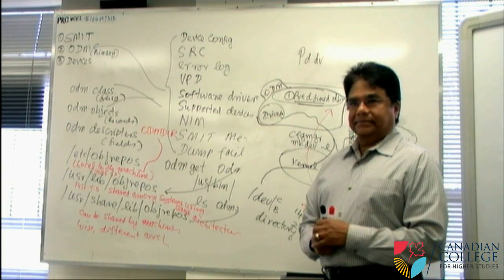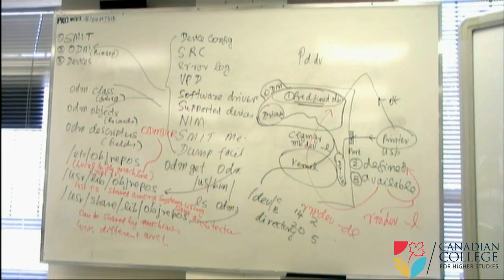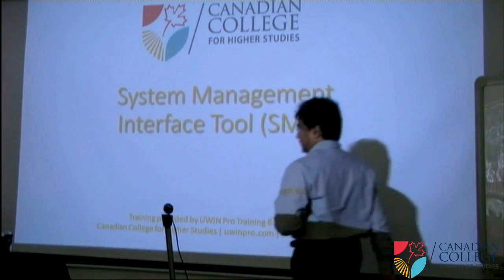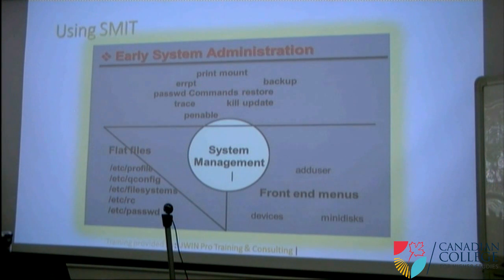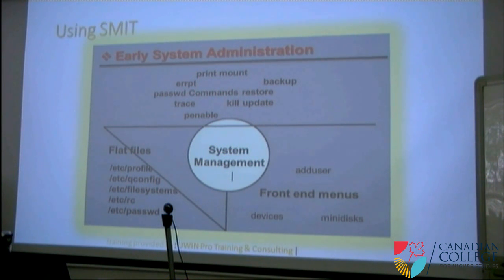A small corruption in the database will cause the whole system to crash. We were talking about the system management interface tool. Normally, you have to do it manually if you want to make changes — ETC profile, ETC config, all those files. And when you're checking reports, you have to use commands. They are not in one place, so you have to remember a lot of commands and their options. There are a lot of options in AIX, and the SMIT menu has almost all of those options.